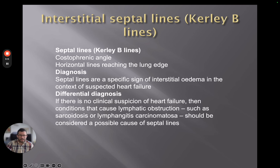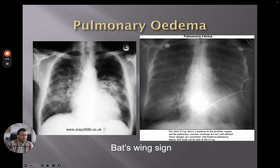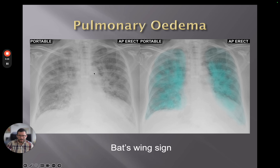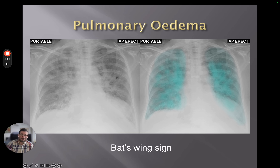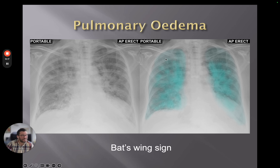Pulmonary edema is quite a striking manifestation of cardiac failure. We've described these perihilar infiltrates — the perihilar airspace pacification — sometimes described as the bat-wing sign. I never really understood bat-wing sign until someone described it as looking like the batman logo rather than bat wings, and it actually made more sense — imagining the mediastinum in the centre with these areas of consolidation around it.